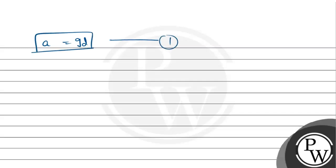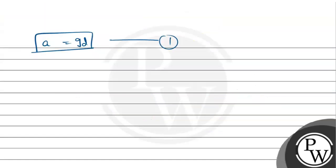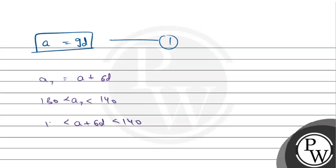अब question में एक और condition दी है। 7th term lies in between 130 and 140. 7th term को हम लिख सकते हैं: a₇ = a + 6d. तो condition है: 130 < a + 6d < 140.